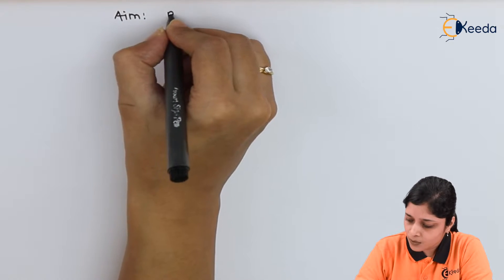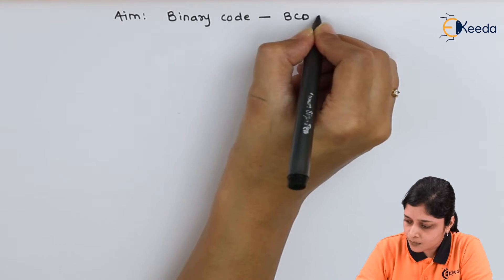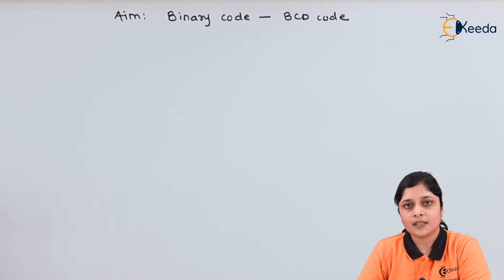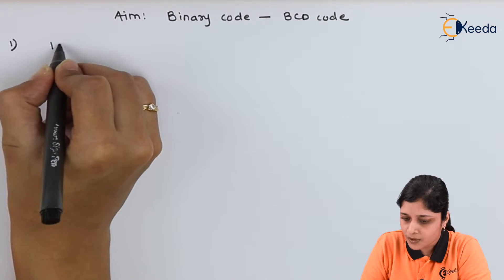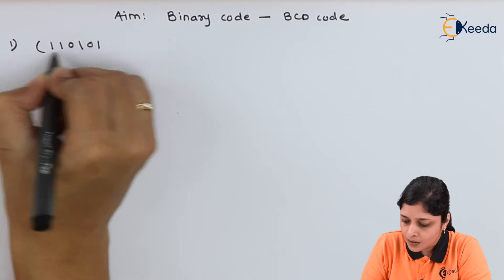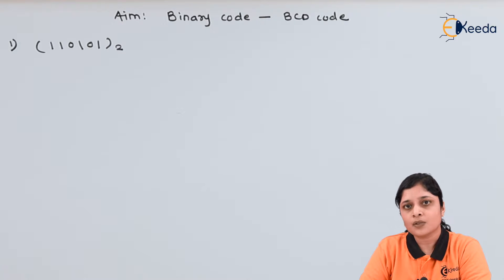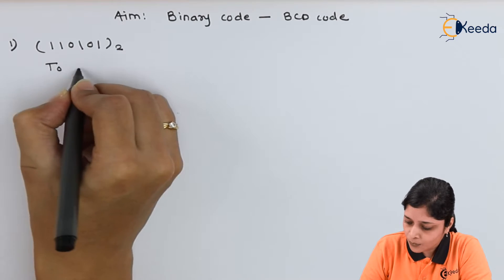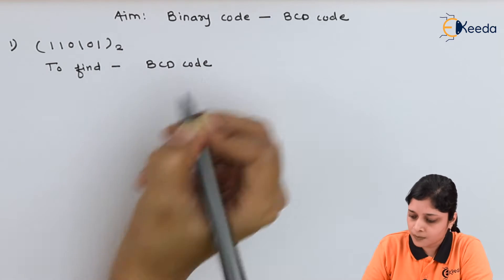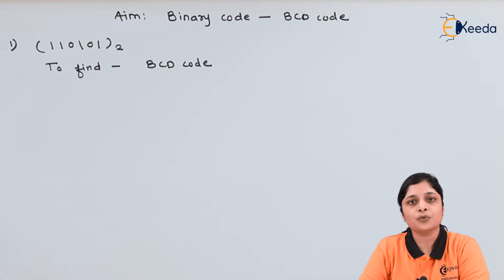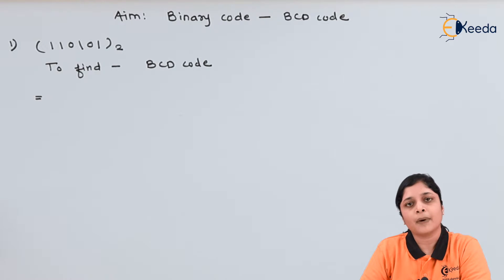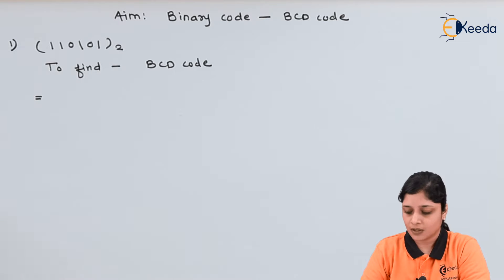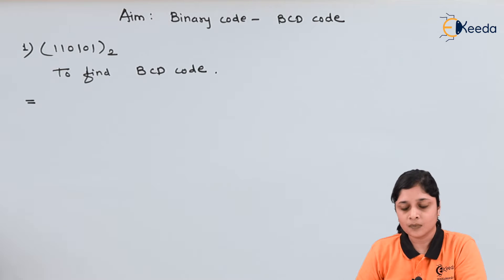Our aim is to convert binary code to BCD code. BCD codes are known as Binary Coded Decimal code, as you already know and we have discussed earlier. Now we will discuss examples. The first example is 110101. To find the BCD code, you should know its decimal value. So you have to apply the procedure to calculate binary to decimal, and then decimal to BCD code. This is the procedure to calculate binary to BCD codes.